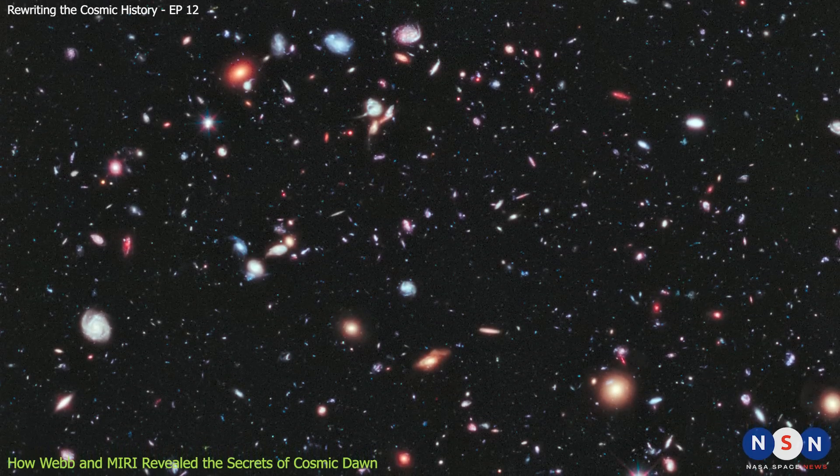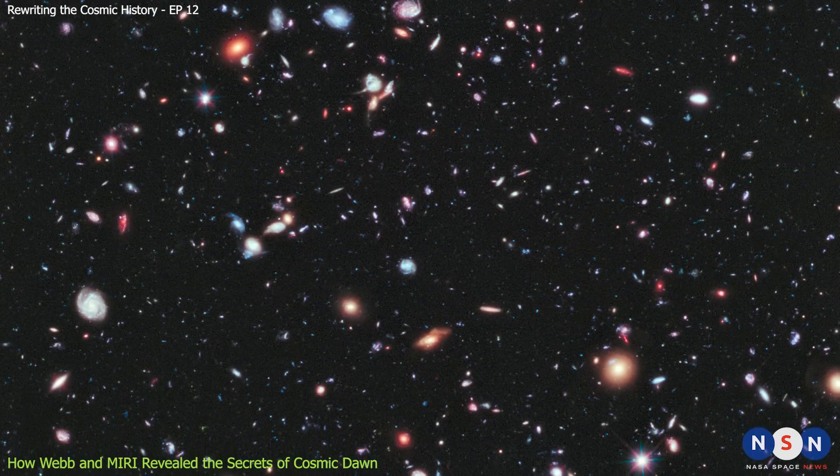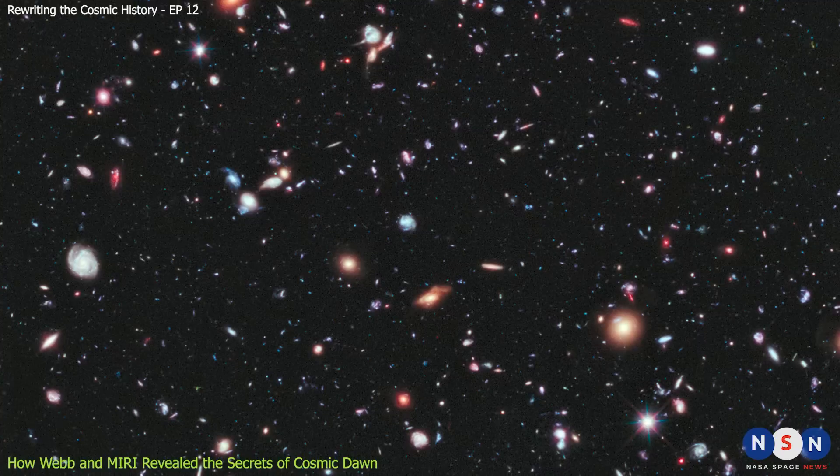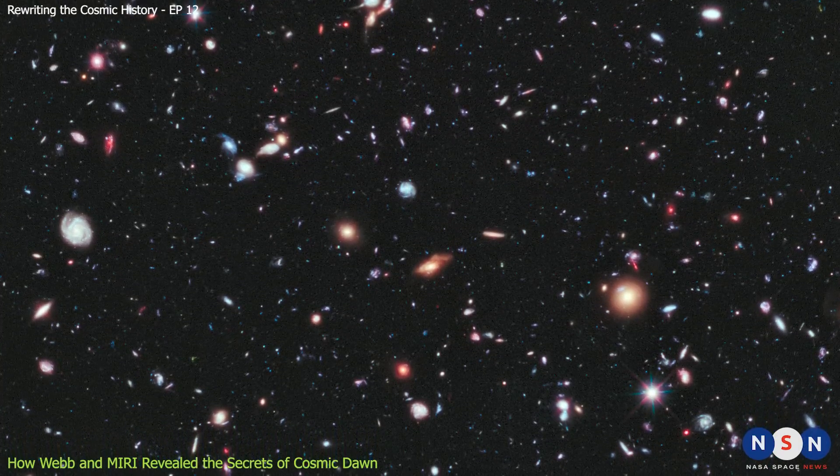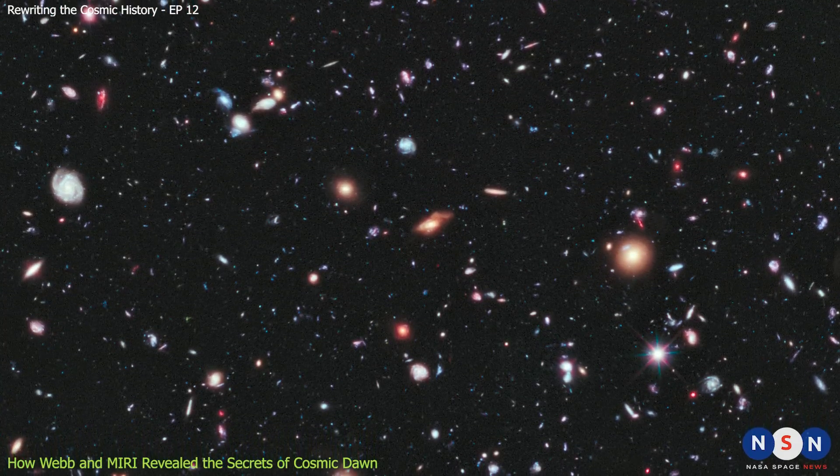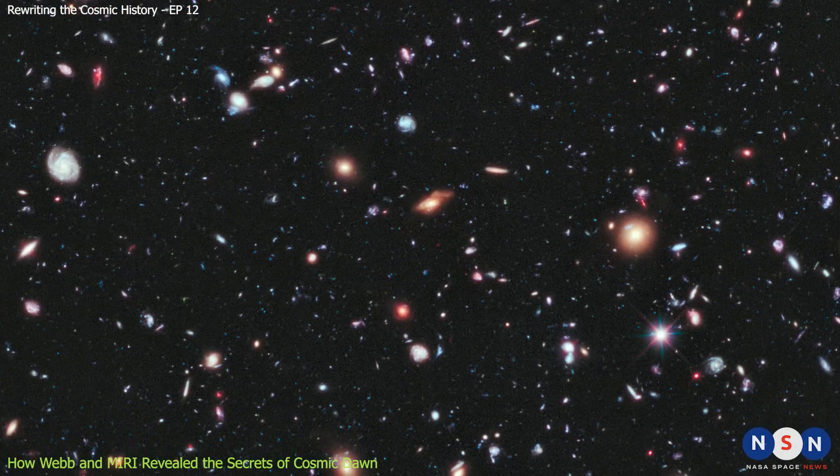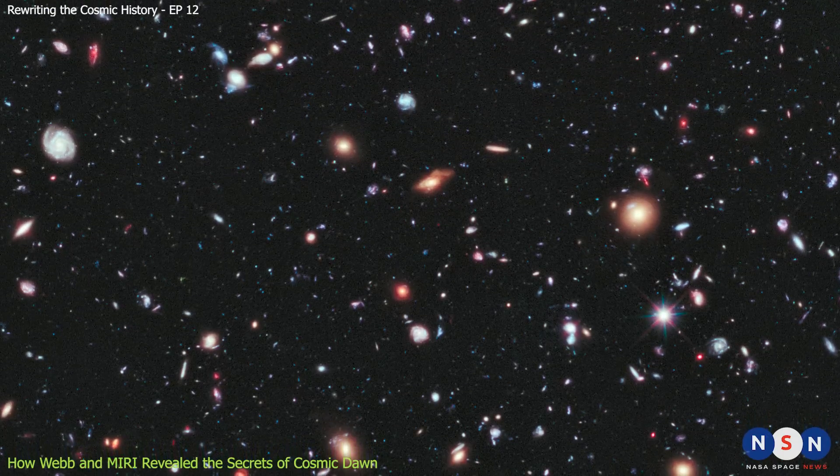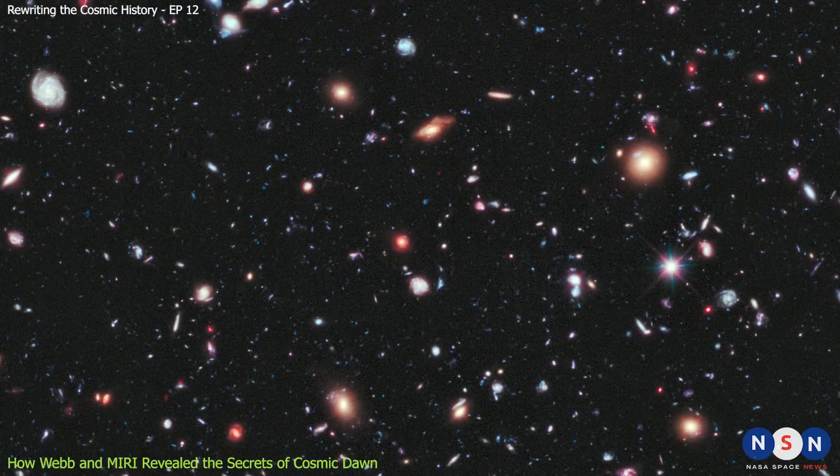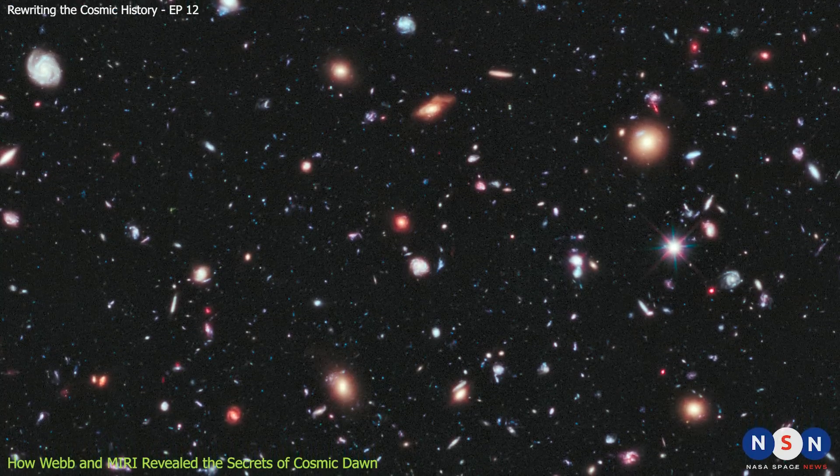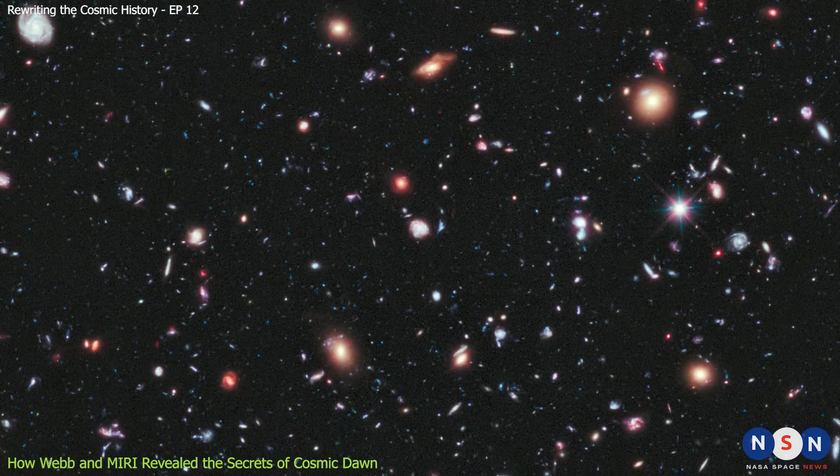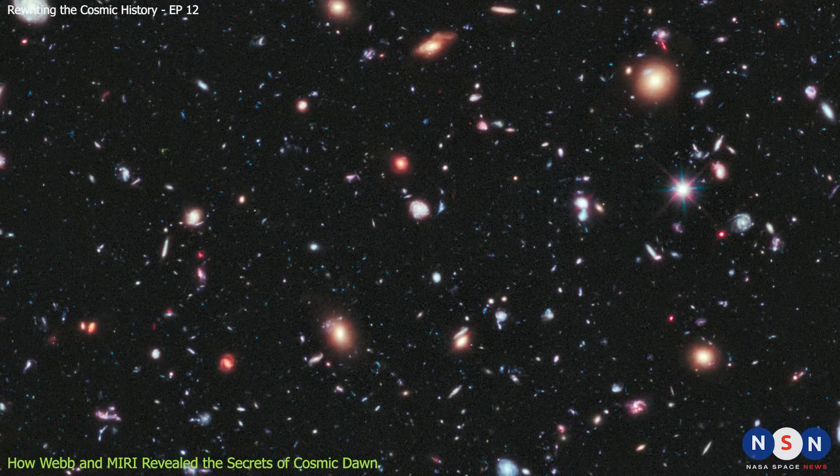One example of this is the recent discovery made by MIRI in one of Webb's first deep field images, the James Webb Extreme Deep Field, which is an area of sky that is slightly larger than the Hubble Ultra Deep Field, and it contains about 15,000 galaxies. Some of these galaxies are so far away that their light has traveled for more than 13.5 billion years to reach us. The James Webb Extreme Deep Field is one of the most amazing images ever taken, because it shows us how the universe looked like during cosmic dawn.